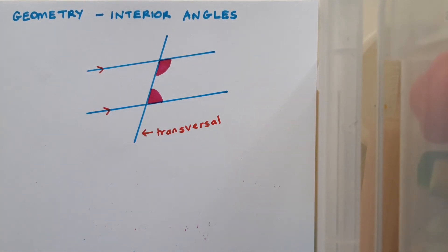So if they're not equal then what rule might be involved with interior angles? Well interior angles add to make 180 degrees. So these two angles shaded in pink when added together make 180.